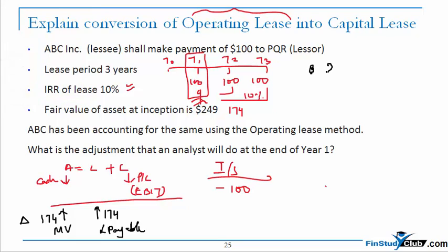depreciation of 249 is the value of the asset divided by 3 is equal to 83. So ideally the depreciation would have been deducted and the interest expense for the first year because of the liability. So this 249 which was the obligation at t0, multiply that by 10%, so another deduction would have been of 25.